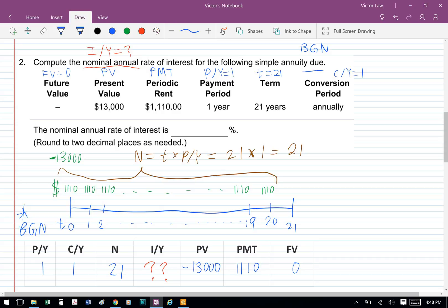Okay, and then P over Y equals to 1, C over Y equals to 1, N equals to 21, present value is negative $13,000, payment is $1,110, future value equals to 0, and we're solving for I over Y.